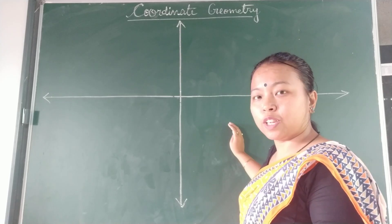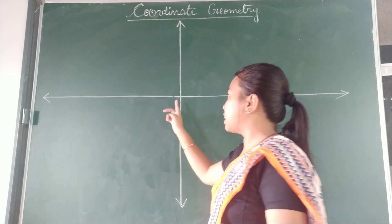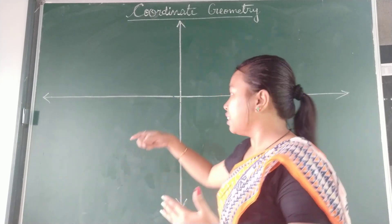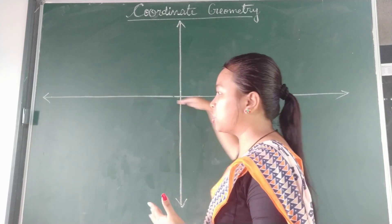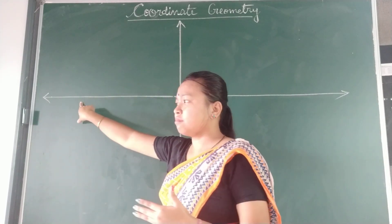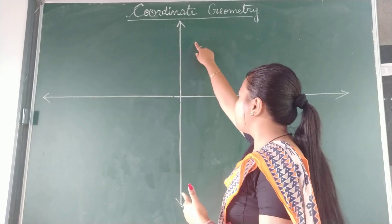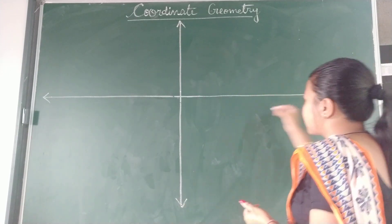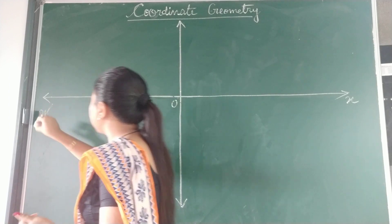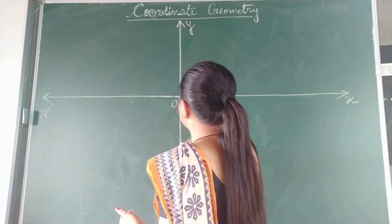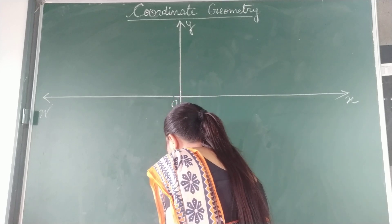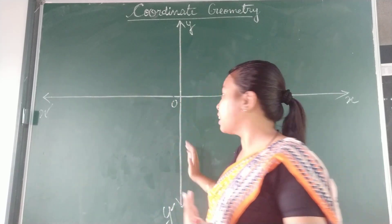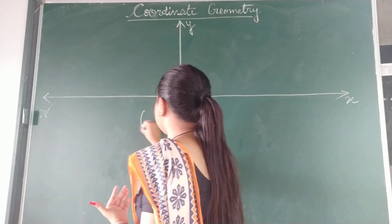In this drawing, you can see two lines intersecting each other at one point. The horizontal line, as you can see, is the X-axis. And the vertical line will be known as the Y-axis. So we can name it as the X-axis and this vertical line as the Y-axis. Both these lines, X-axis and Y-axis, intersect at the point O. This O is known as the origin.